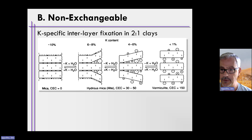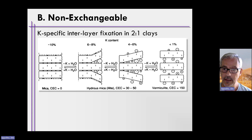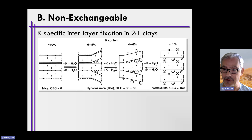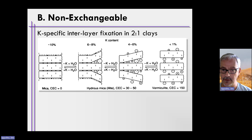As weathering continues, the interlayer starts to expand more and more, and eventually it's fully expanded with potassium locked up inside. When we see differences in the amount of potassium locked in the interlayer of two-to-one-type clays, there's a difference in cation exchange capacity simply due to weathering over time. The two-to-one-type clays with relatively low CEC are illites — they have low CEC because they're not fully expanded and cannot fully expand, so potassium can't fully move into the interlayer.